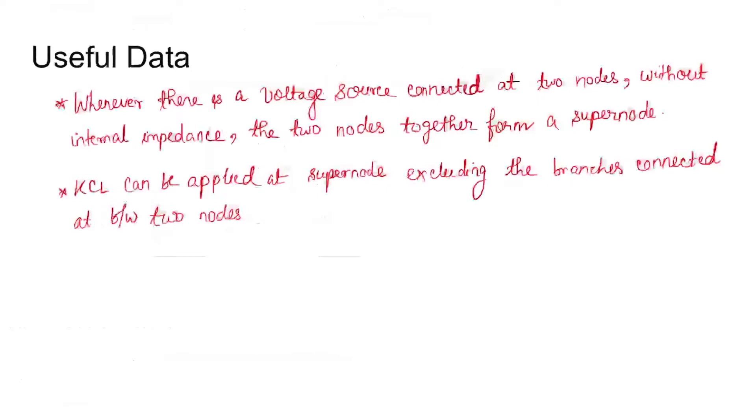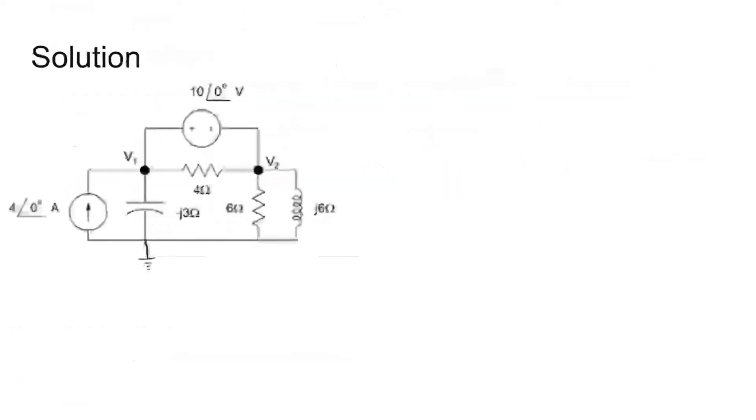What I meant to say is that for coming to the solution and explaining the concept of super node, if v1 and v2 are two nodes and a voltage source is connected between them directly, applying KCL at this node, let us name it a and b, is not individually possible because the current flowing through this cannot be calculated as this has no internal impedance. So these two nodes together form a super node and KCL can be directly applied.